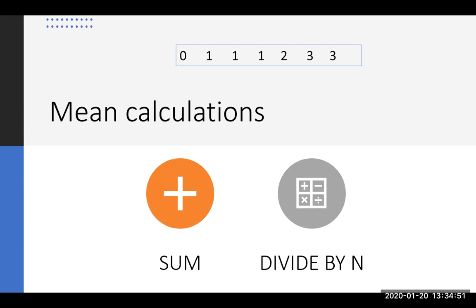We're going to take those and add them up. So we'd say 0+1+1+1+2+3+3, that totals 11. Now I know that there are seven numbers there, so I'll take my 11 and divide it by seven, and that ends up being 1.57.